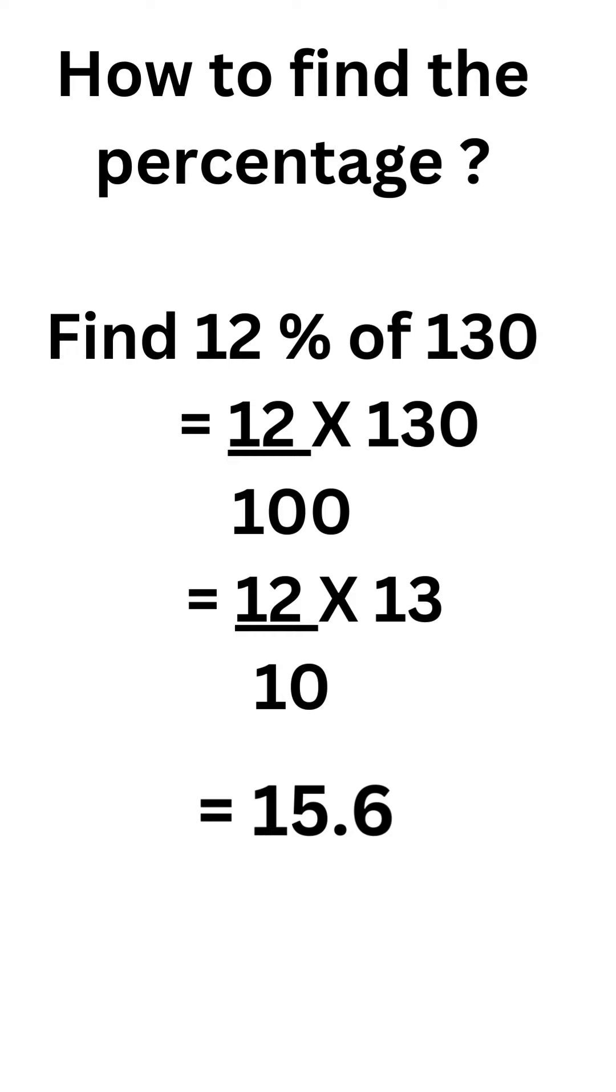Easy, right? The trick is, you have to cancel the zeros of numerator with the zeros of denominator. If any zero is left over in the denominator, then just put decimal point with the number of zeros left over to that place.